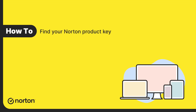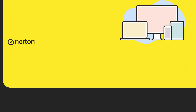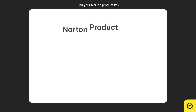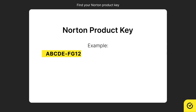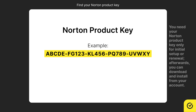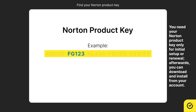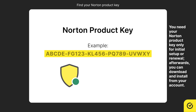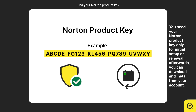Hi! In this video, you'll learn how to find your Norton Product Key. Your Norton Product Key is a 25-character alphanumeric string that is shown in five groups of five characters each, separated by hyphens, used to activate or renew your Norton product.